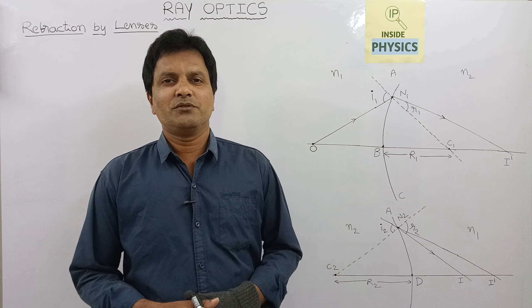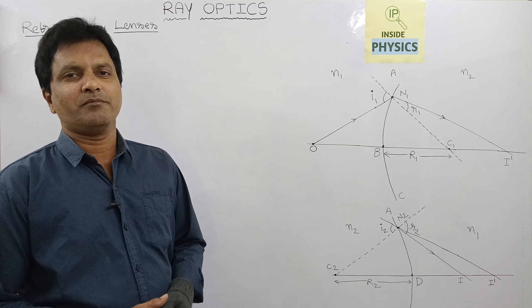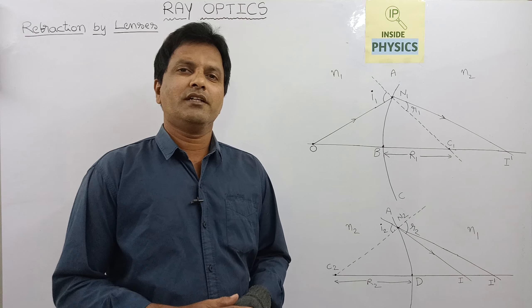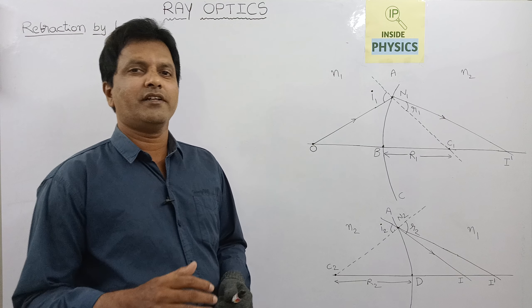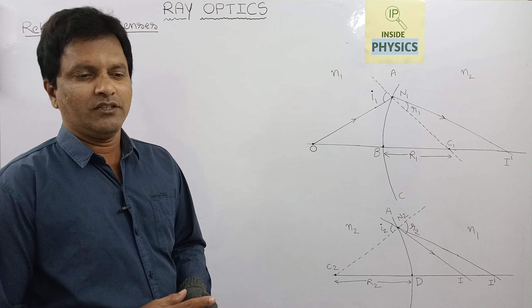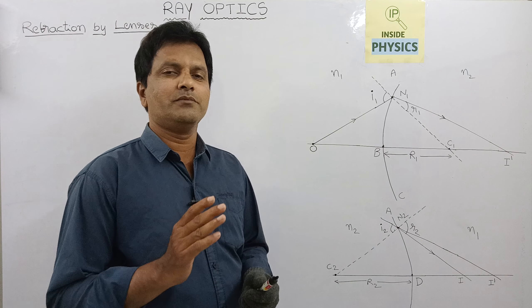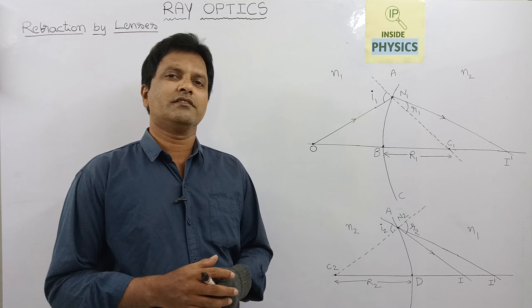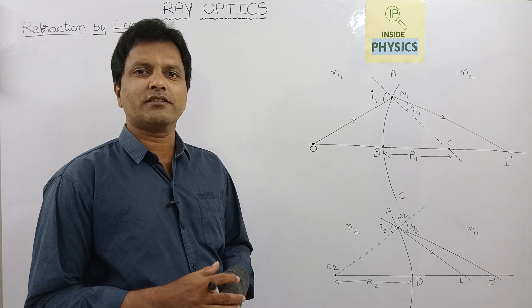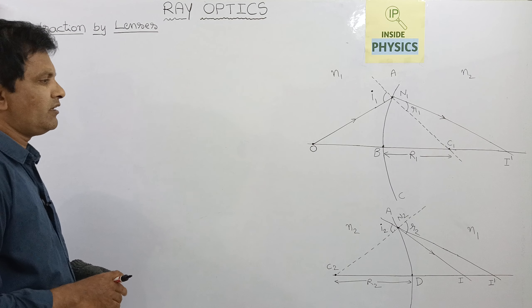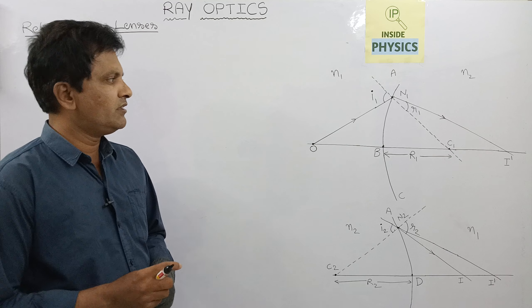Hello students, welcome to Inside Physics. I am Srinivas. Today we are going to derive the lens maker formula in ray optics. In the previous class we have seen the refraction through curved surfaces, and we have derived a relation between refractive index, focal length, and radius of curvature. Today we will see the refraction by lenses.